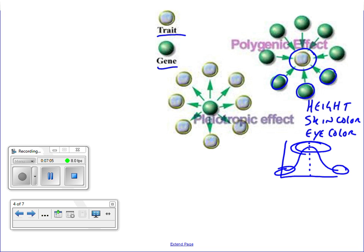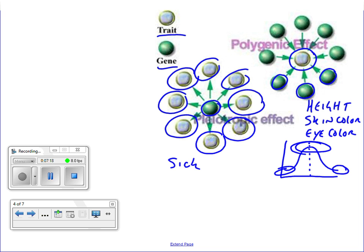The opposite is pleiotropic, where we have one gene causing lots of effects to the organism. Something like sickle cell anemia would be a pleiotropic effect, where we end up having just one change in a gene causing the red blood cells to change, which causes issues with the heart and the liver and the muscle tissues. So we're getting one gene change, tons of different effects.